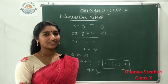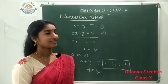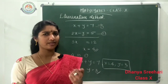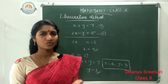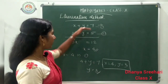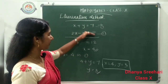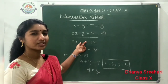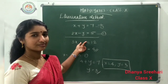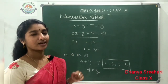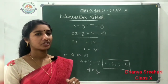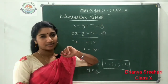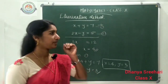This is the elimination method. Why is it called that? While doing some operation, one variable is eliminated — that is why it is called the elimination method. While adding or subtracting, one variable is eliminated.